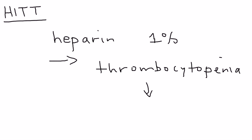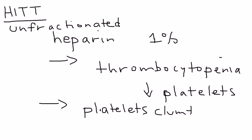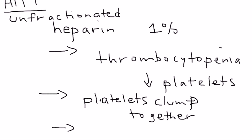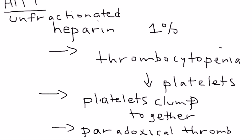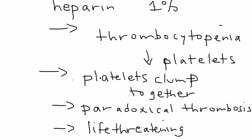The particular type of heparin we're talking about is unfractionated heparin. What happens is these platelets eventually clump together, and because they clump together, this can lead to a paradoxical thrombosis. When you think of thrombocytopenia you don't think of a blood clot, but in this case it forms a blood clot — a thrombosis.